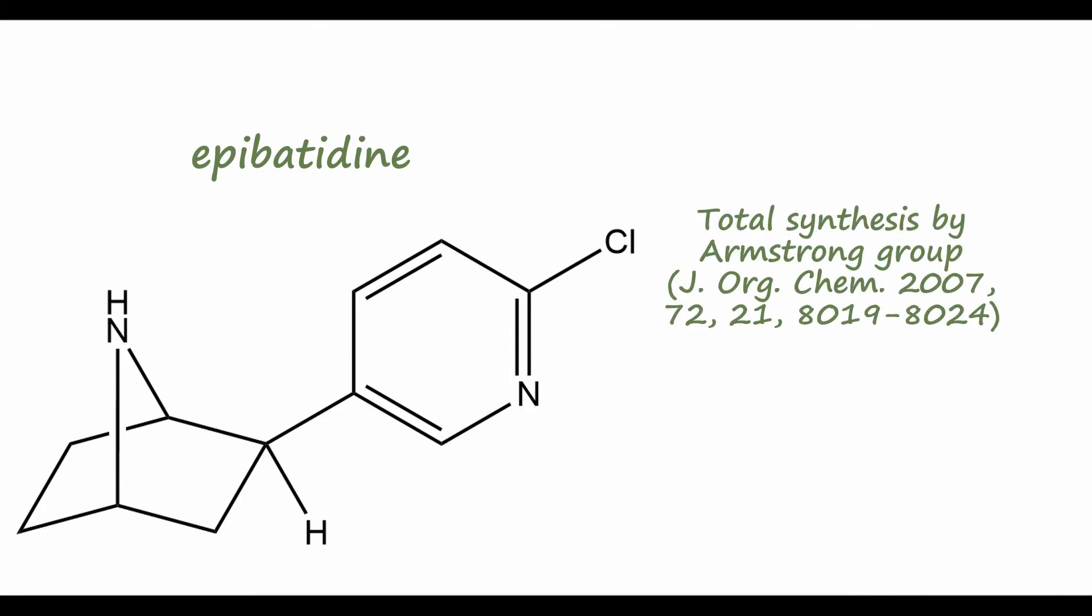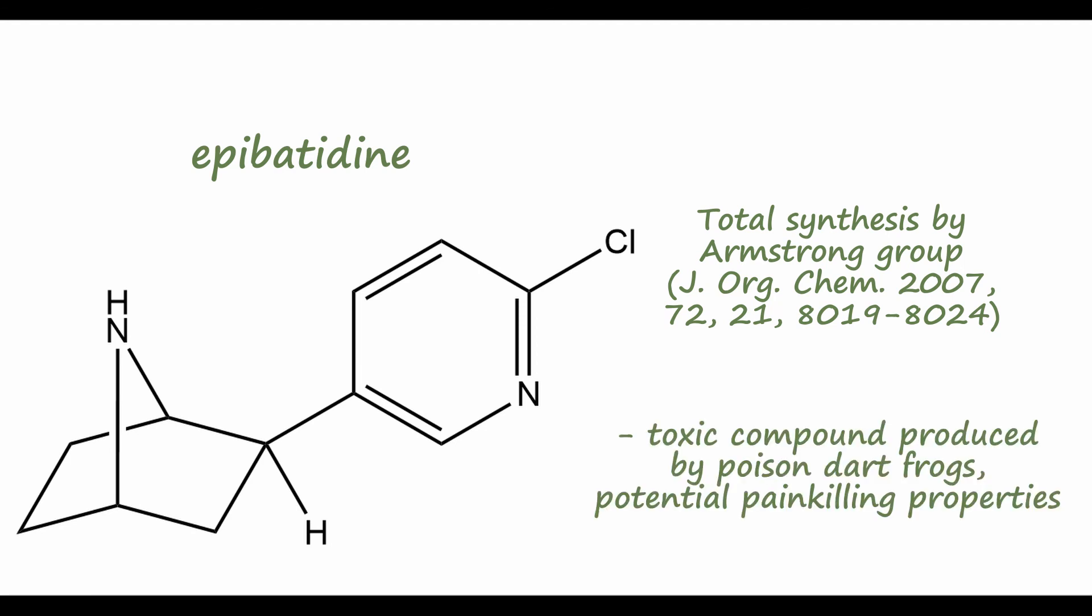Finally, I'd like to show you an example of the Jones oxidation in the chemical literature, so you can see how this reaction is actually used in the field of organic synthesis. We'll look at the total synthesis of epibatidine by the Armstrong group that was published in 2007. Epibatidine is a very toxic compound produced by certain species of poison dart frogs. The toxicity of this compound precludes its medicinal uses, but certain analogues of this structure have been shown to be very potent painkillers.